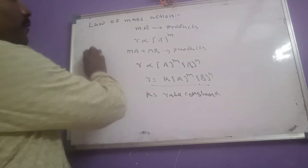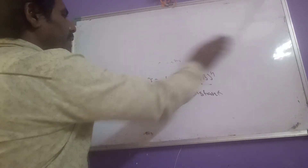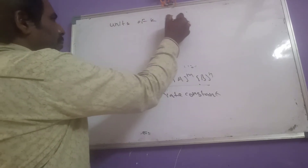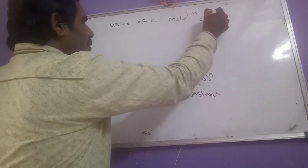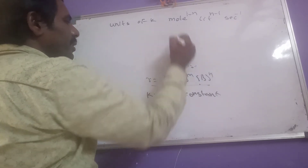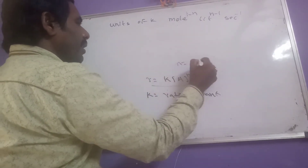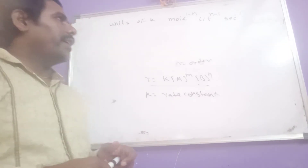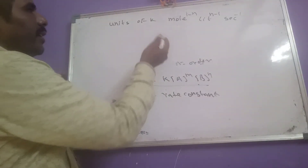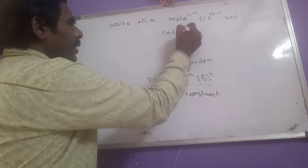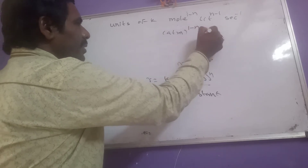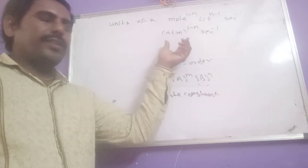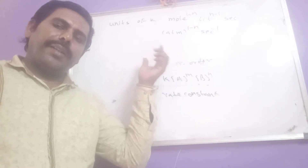What are the units of rate constant k? The units are mol^(1−n) · L^(n−1) · s^−1, where n is the order of the reaction. If the reactants are present in gaseous phase, the units of k are atm^(1−n) · s^−1, where n is again the order. These are the units of the rate constant or specific reaction rate.